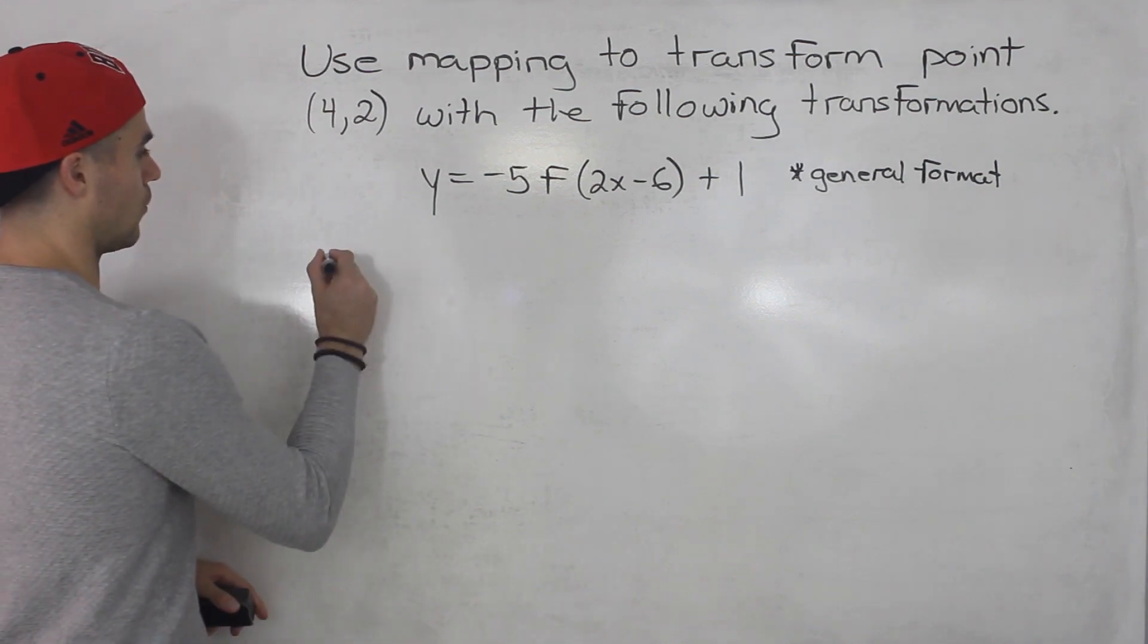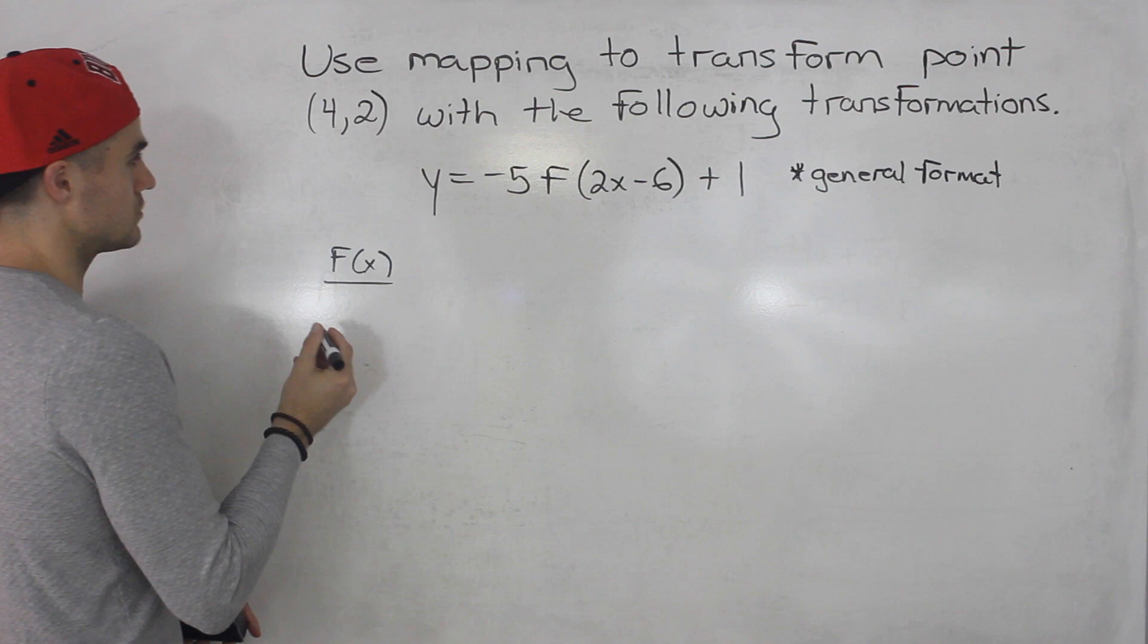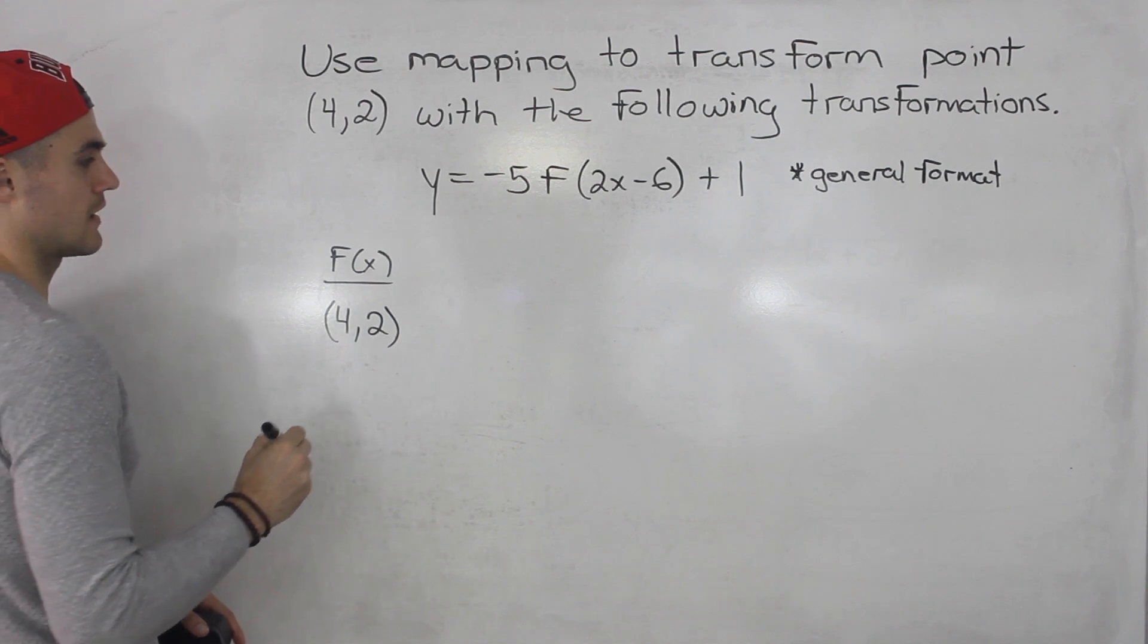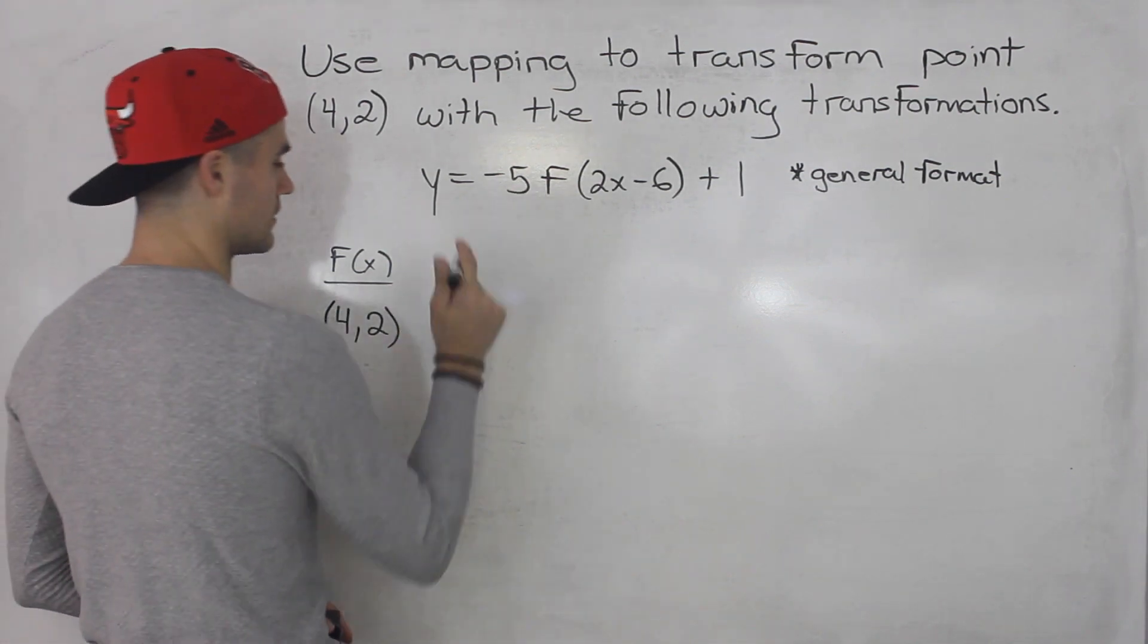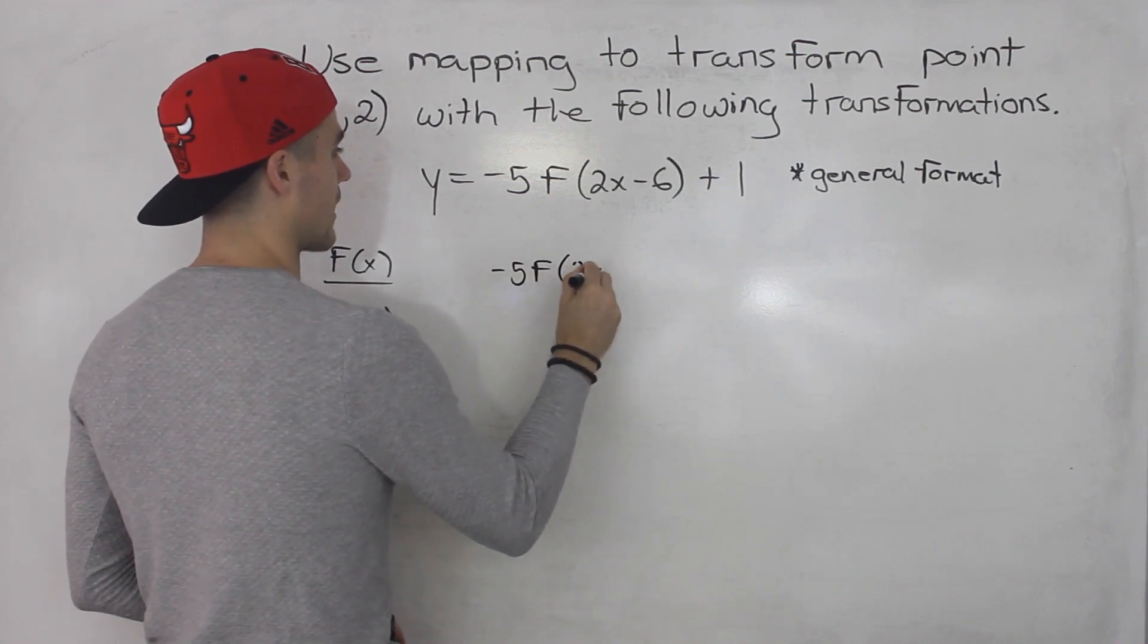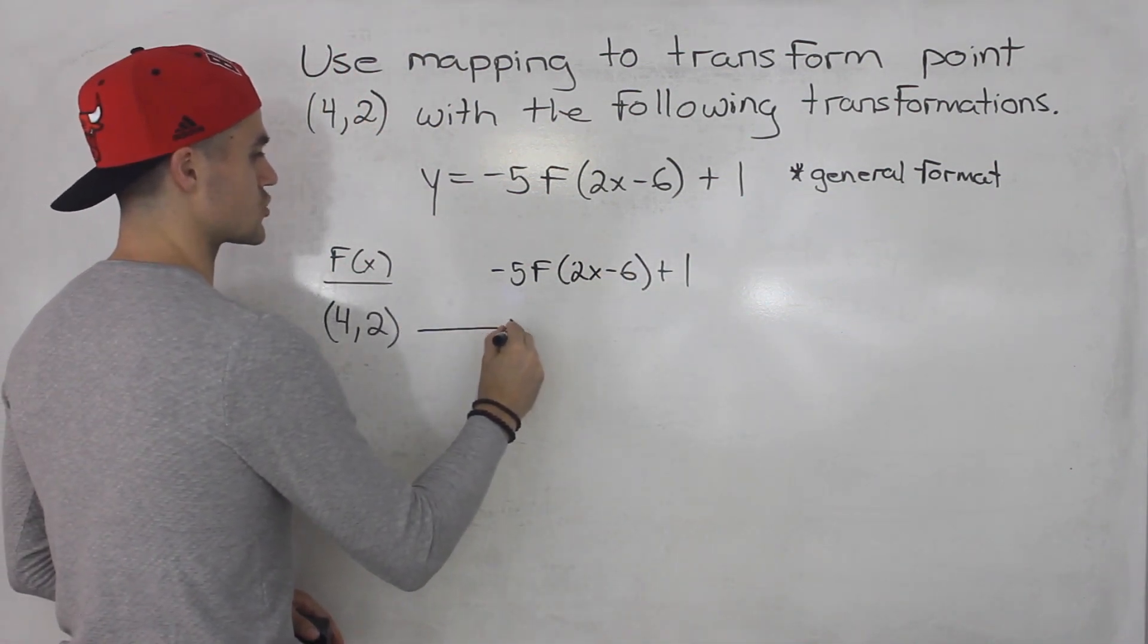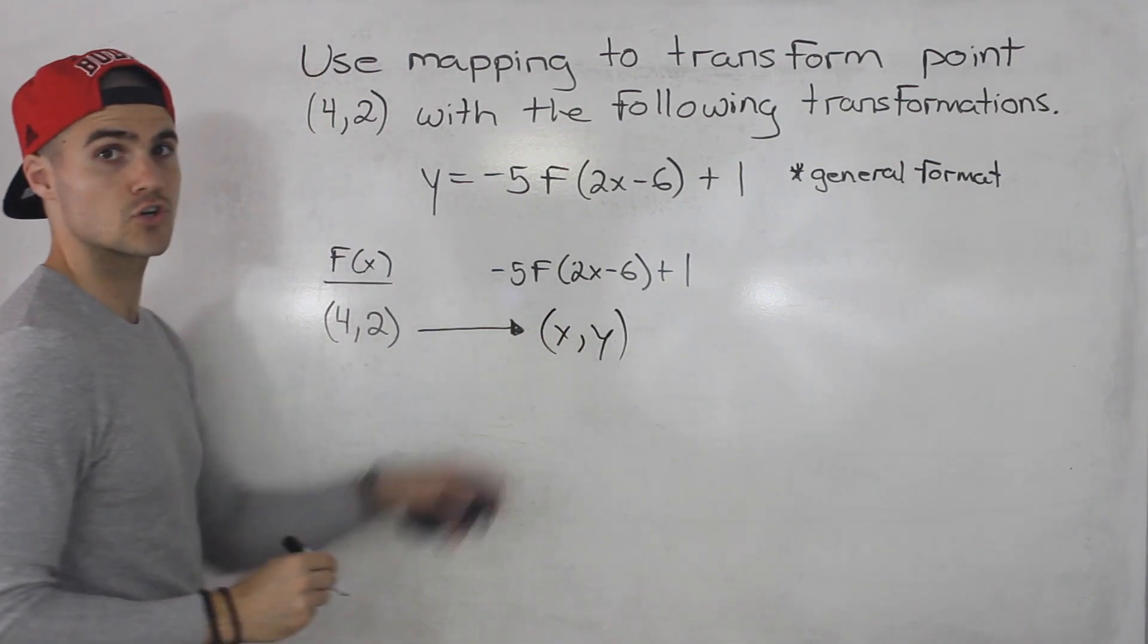We don't know what the parent function f(x) is, but we do know that the point (4,2) is on the function. Then this parent function, we're going to be transforming it here to negative 5 f of 2x minus 6 plus 1. So this point is going to transform to some x and y coordinate, and that's what we're trying to find here.